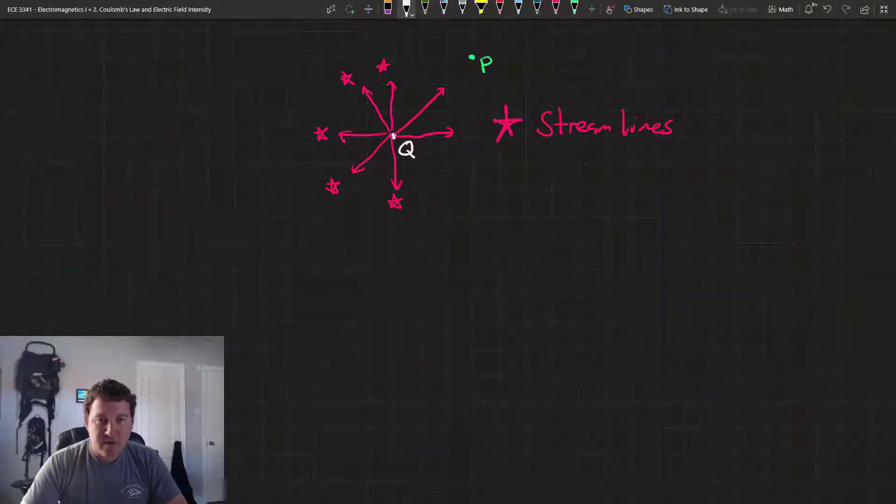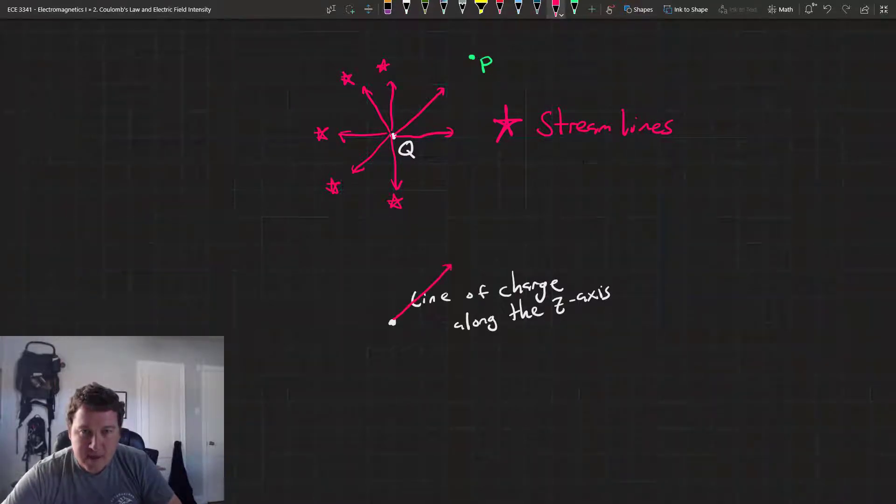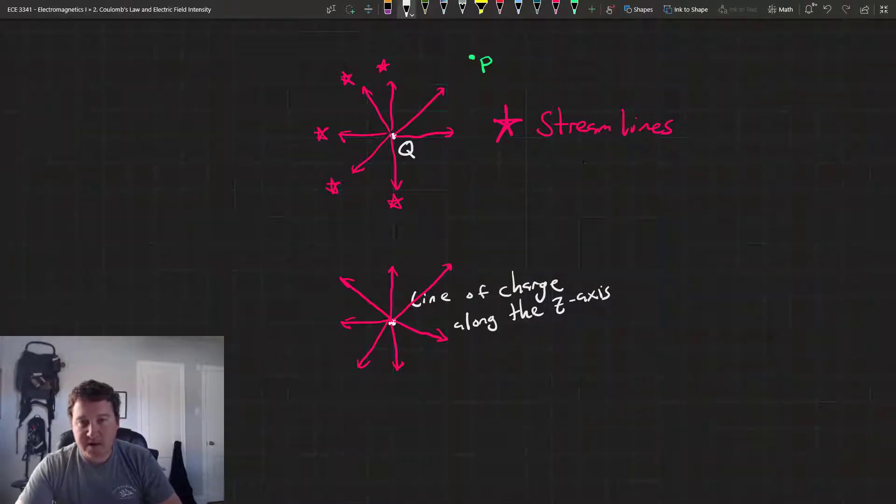Imagine that we have a line of charge along the z-axis. Now, we'll only concern ourselves with the streamlines that emanate along the x-y plane so that we can take advantage of that symmetry.